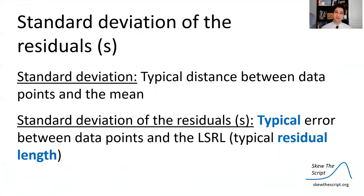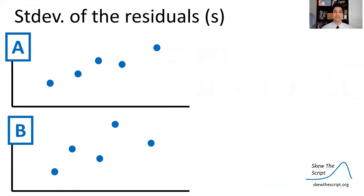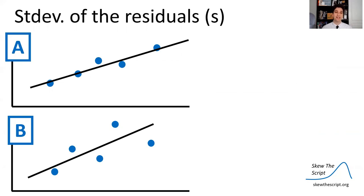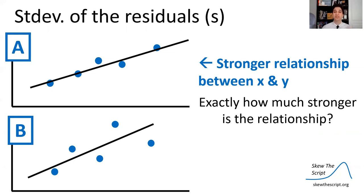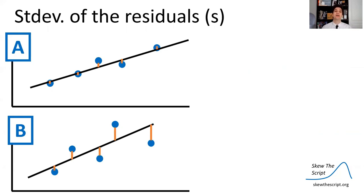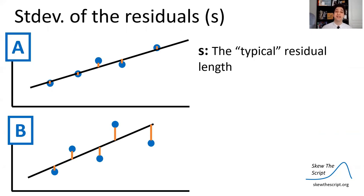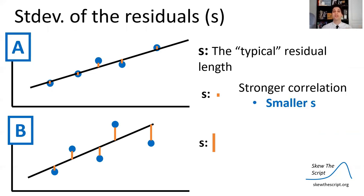One way to look at that is the standard deviation of residuals. Standard deviation is a typical distance between data points and their mean. The standard deviation of residuals is the typical error — typical residual length — between data points and the least squares regression line. With two simple data sets, one with a stronger correlation and one with a weaker correlation, the residuals in the weaker one tend to be larger. When there's a stronger correlation, we have a smaller standard deviation of residuals; when there's a weaker correlation, we have a larger one.